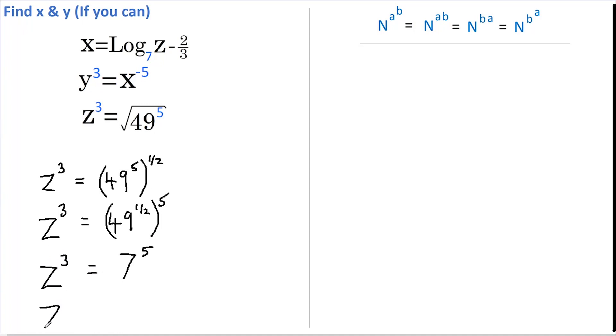If we now raise both sides to the power of 1 third, in other words we're taking the cube root of both sides, we get this. And again, using this rule, we can rewrite this as the powers multiplied together.